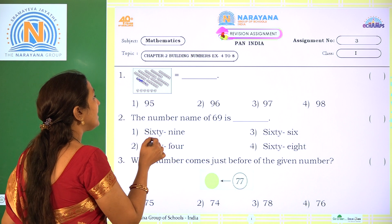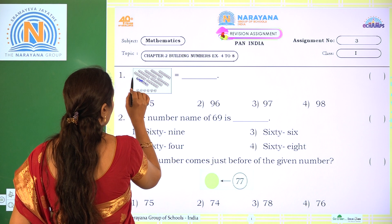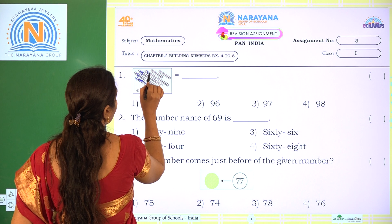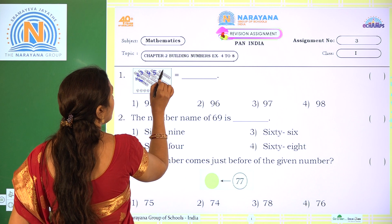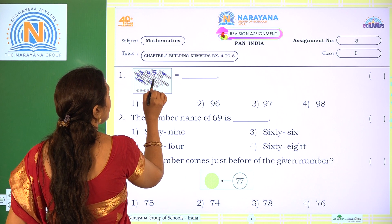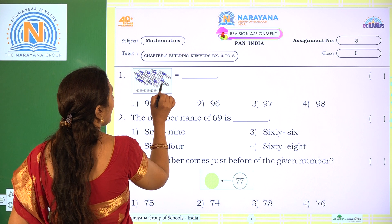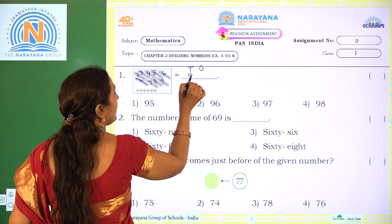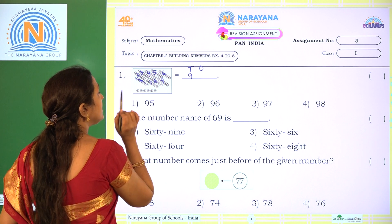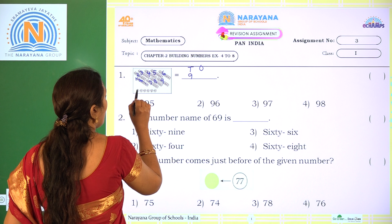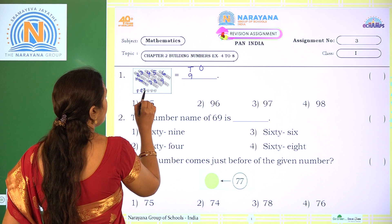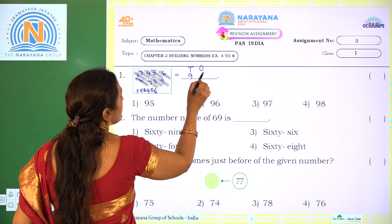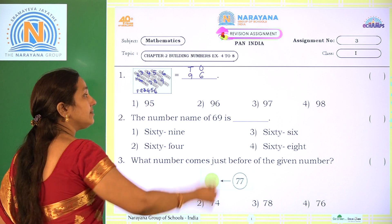So how many tens are there? Count along with me children: 1, 2, 3, 4, 5, 6, 7, 8, 9. So there are 9 tens. Now how many single blocks are there? Count: 1, 2, 3, 4, 5, 6. So 6 is the ones place.